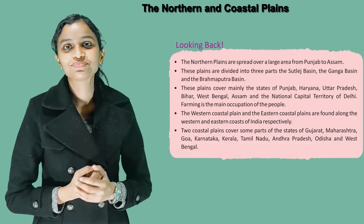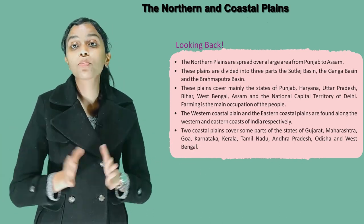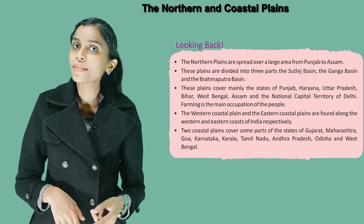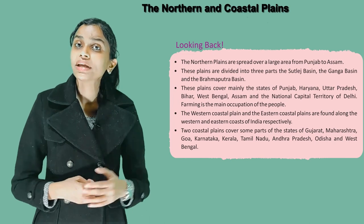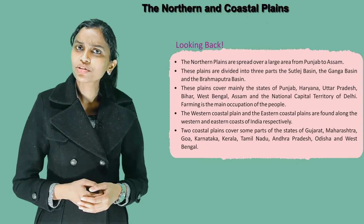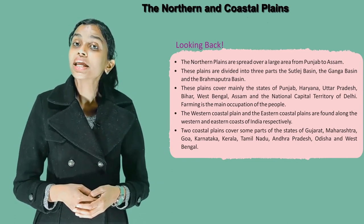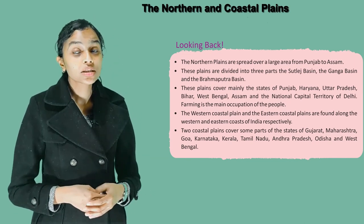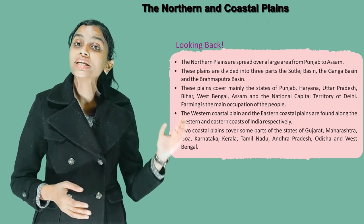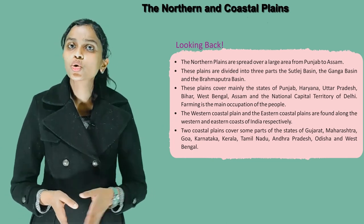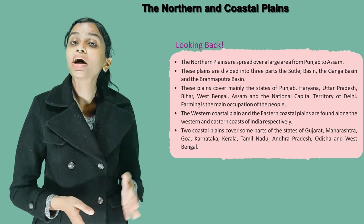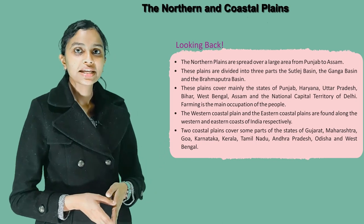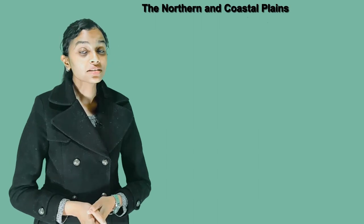Looking Back. The northern plains are spread over a large area from Punjab to Assam, divided into three parts: the Satloj Basin, the Ganga Basin and the Brahmaputra Basin. These plains cover mainly the states of Punjab, Haryana, Uttar Pradesh, Bihar, West Bengal, Assam and the National Capital Territory of Delhi. Farming is the main occupation. The western coastal plain and the eastern coastal plain are found along the western and eastern coasts of India respectively, covering parts of Gujarat, Maharashtra, Goa, Karnataka, Kerala, Tamil Nadu, Andhra Pradesh, Odisha and West Bengal. Bye, and we'll meet in the next chapter.